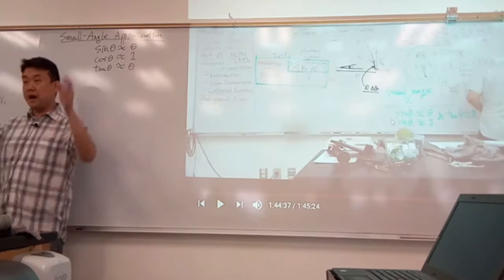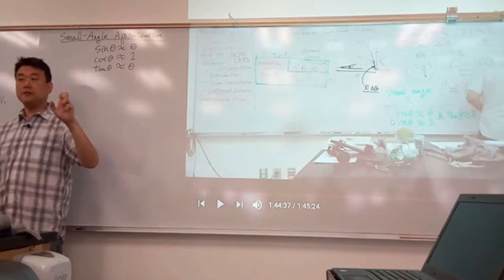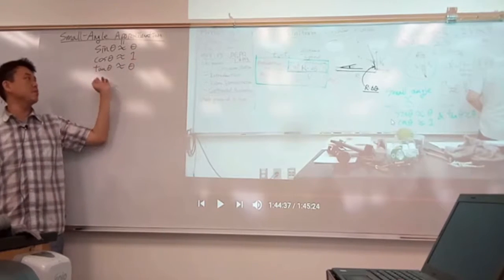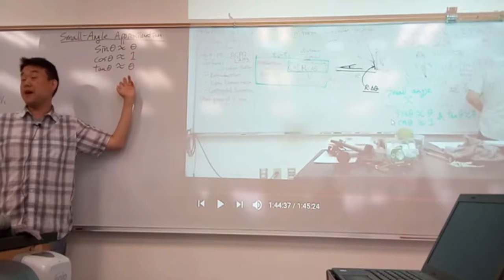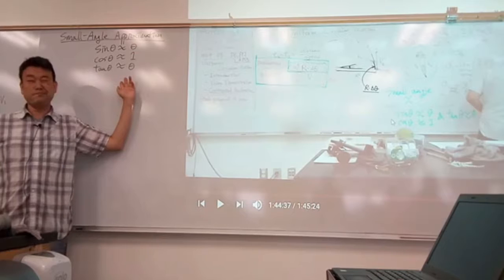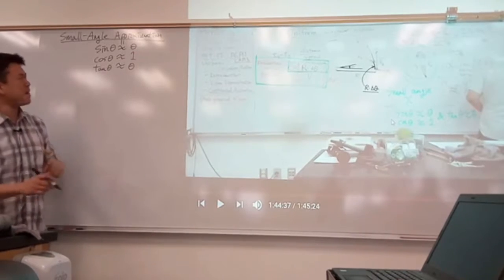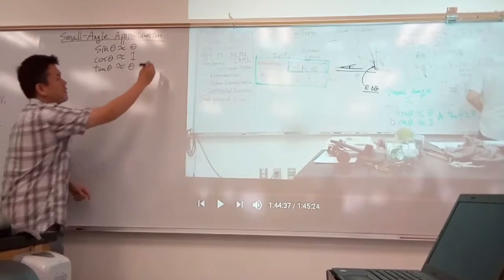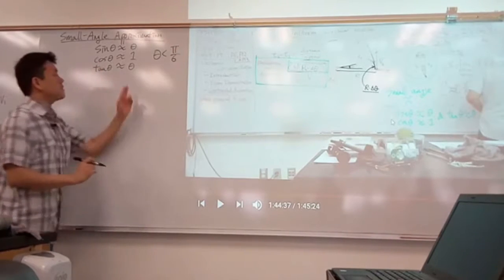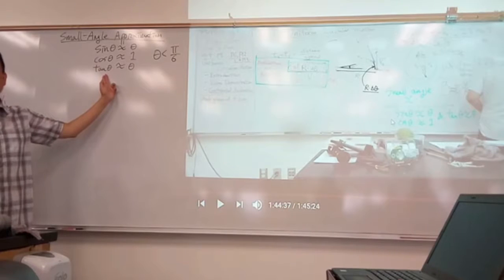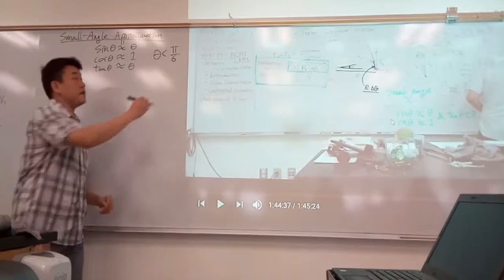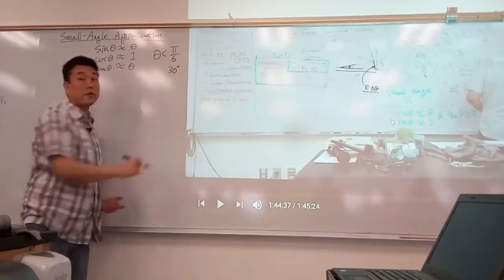And what do I mean by small angle? How small do you think angles have to be for these to be valid within 95%? I'll just give you the number. I'm pretty sure they are valid if theta is less than pi over 6, then these are valid within 90% or 95%. So pi over 6, or in degrees, if theta is about 30 degrees or less.